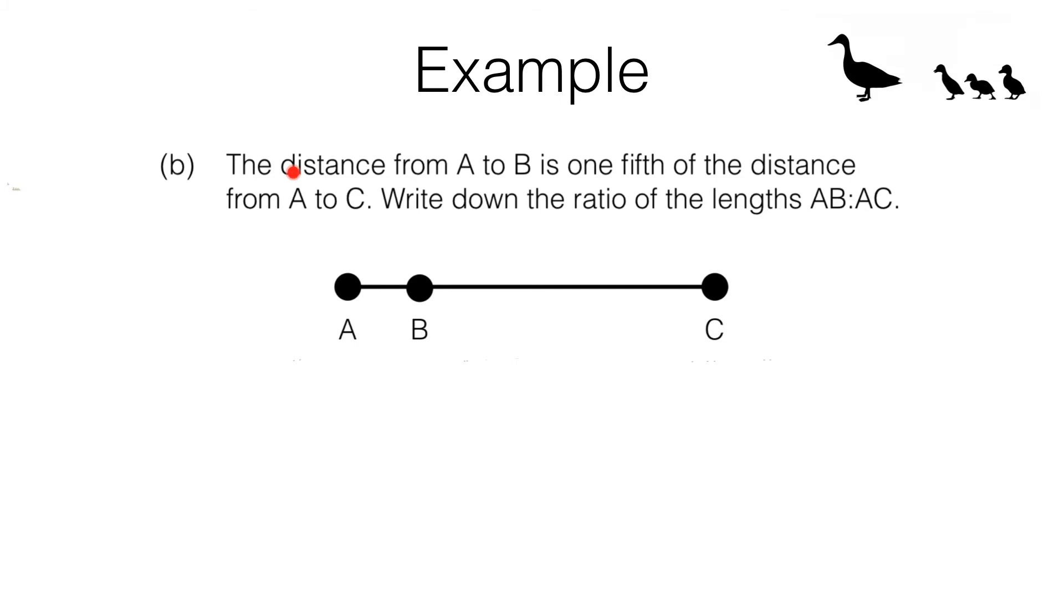Now if one distance is one fifth of the other you can think of that as the other distance being five times the first distance. Now we don't know what the exact distances are but we don't need to. Let's say the distance from A to B is one. Now when I say one I don't necessarily mean one mile or one kilometre. It's just one whatever unit we need and we might even make up a unit that means it's the exact distance between these two. So I might even call it one squile. I've just made up a word there.